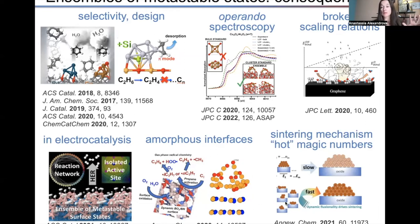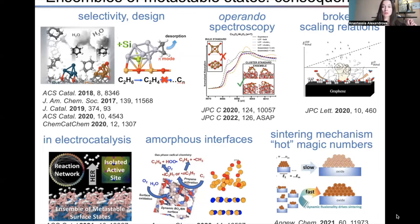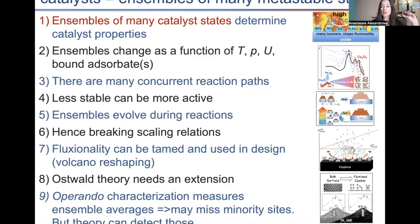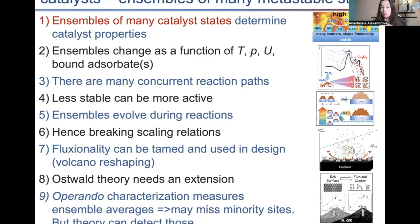We can break scaling relations on purpose and in a correct way. We made a prediction — currently being followed up with experiment — showing how to use this feature to design catalysts that break scaling relations favorably, specifically making catalysts with lower overall overpotential. We extended this concept to electrocatalysts and to amorphous interfaces that are not cluster-based. We also revised the theory of sintering in this sub-nanocluster regime.